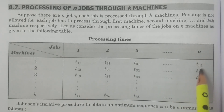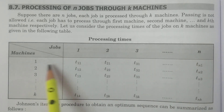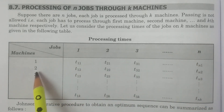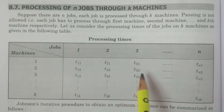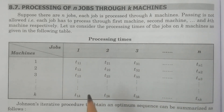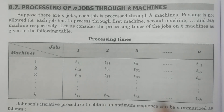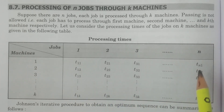That is, j is equal to 1, which represents the first mission. Similarly for the second mission, j is equal to 2: t12, t22, t32 and so on tn2. Here i refers to job and j refers to mission. For the kth mission: t1k, t2k, t3k and so on tnk — these are the processing times of k missions and n jobs in the specified sequence.